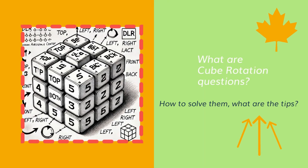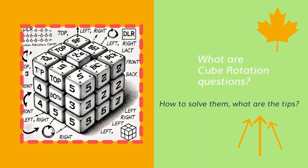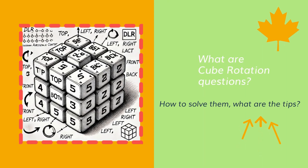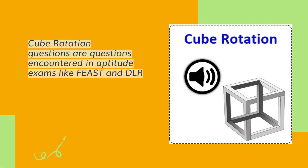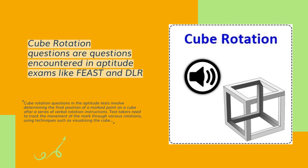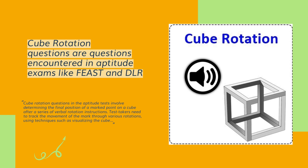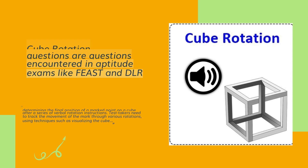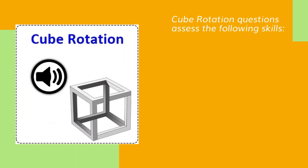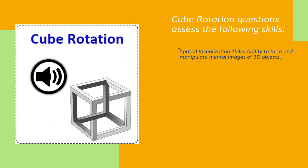What are cube rotation questions? Cube rotation questions in aptitude tests involve determining the final position of a marked point on a cube after a series of verbal rotation instructions. Test takers need to track the movement of the mark through various rotations, using techniques such as visualizing the cube.